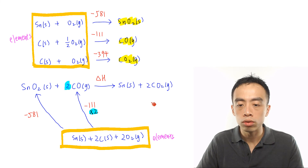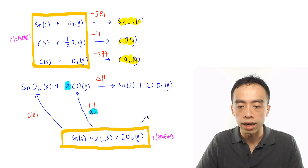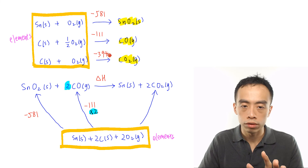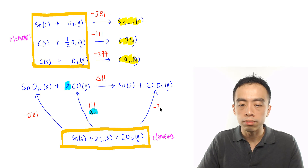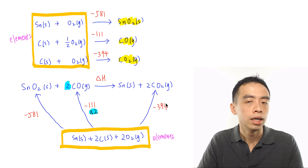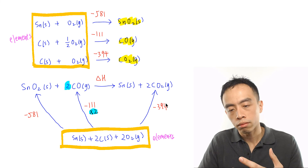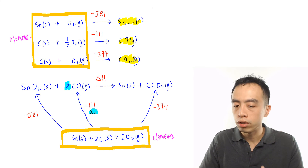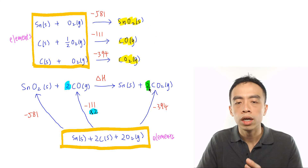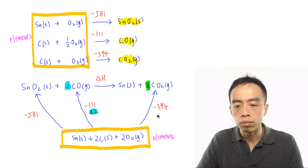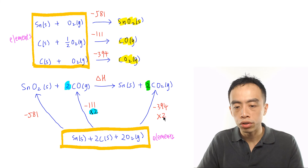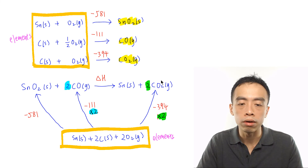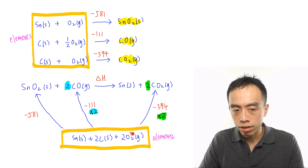The final arrow is elements to carbon dioxide. ΔHf(CO₂) = minus 394 kJ per mole, but we have 2 moles of CO₂ in this equation, so I multiply by 2 to get minus 788. Formation must always follow the coefficient relative to the per-mole reference. The energy cycle is now fully set up.